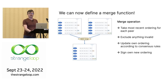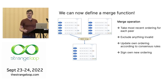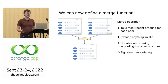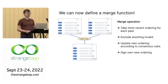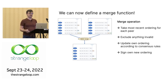We can now define a merge function. Once we define beliefs as a data structure, there's a natural merge operation: whenever we merge two beliefs, for each peer in those two beliefs, we just take the most recent ordering according to the timestamp. They're signed, so it's authenticated, and we can exclude anything invalid. If someone puts in invalid data or a bad signature, we kick that out. We then update our own ordering according to the consensus rules, and since we have our own private key, we sign the updated belief. We can only do it for ourselves — we can't impersonate anyone else.